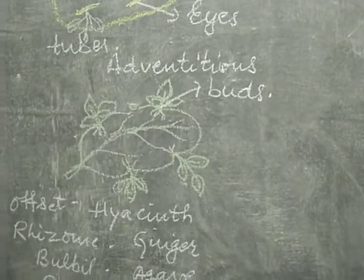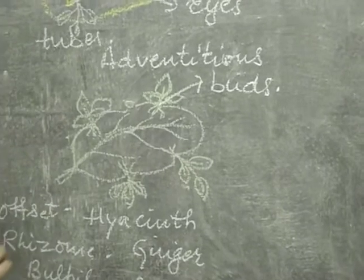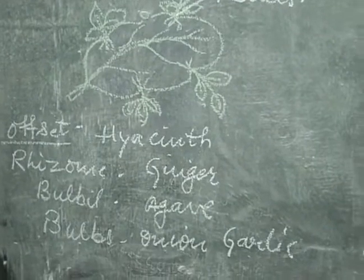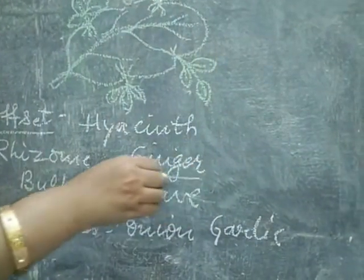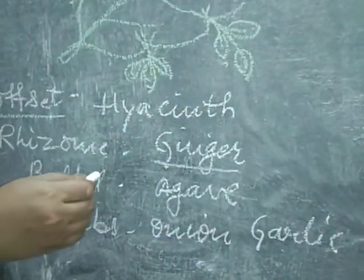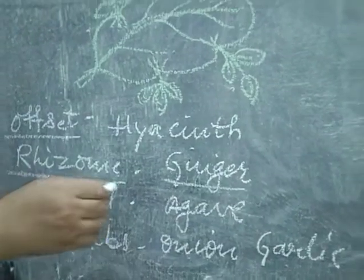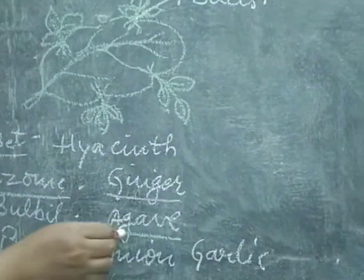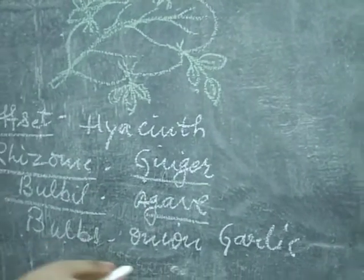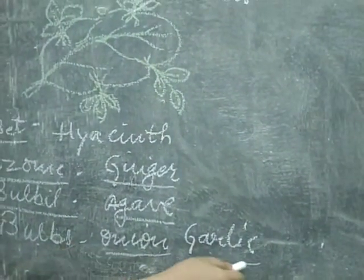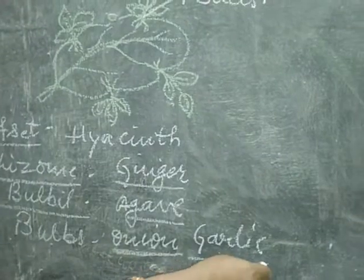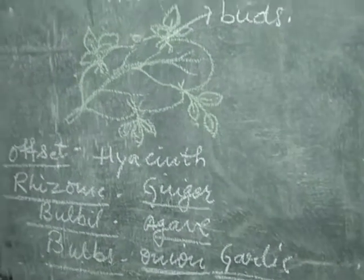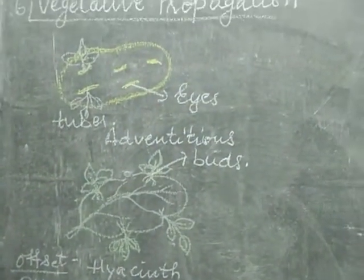One type of plant propagation is called offsets — for example, water hyacinth. Another type is called rhizome. There are also plants called bulbs — for example, onion, garlic, and amaryllis lily. These are all vegetative propagation structures and are vegetative properties.